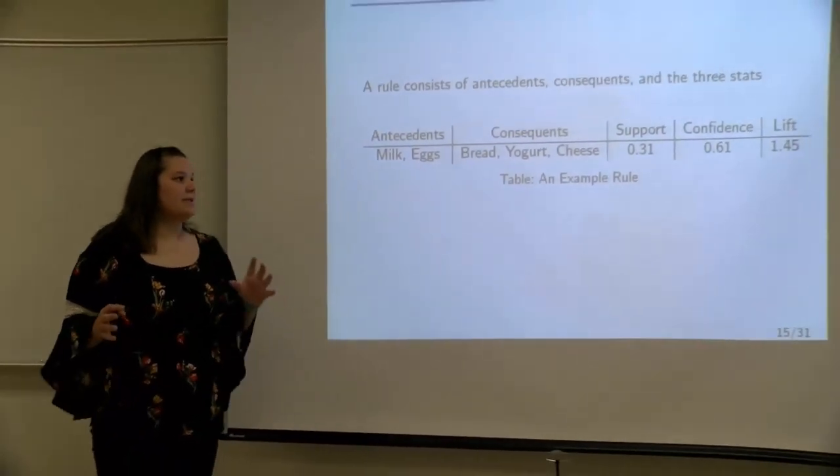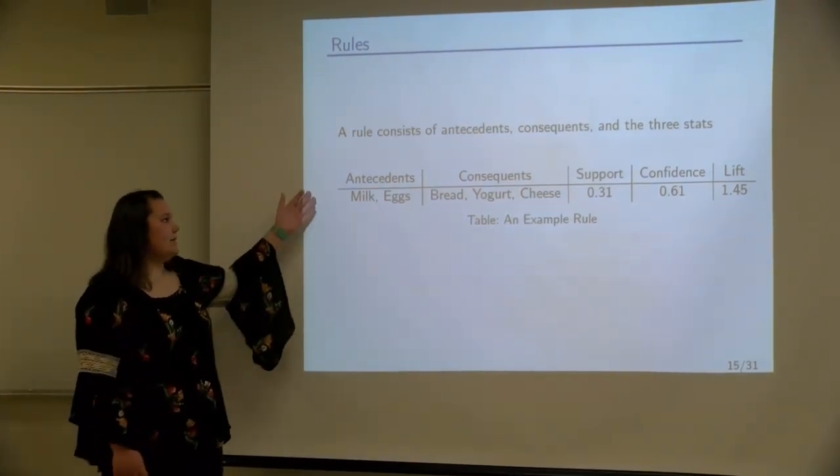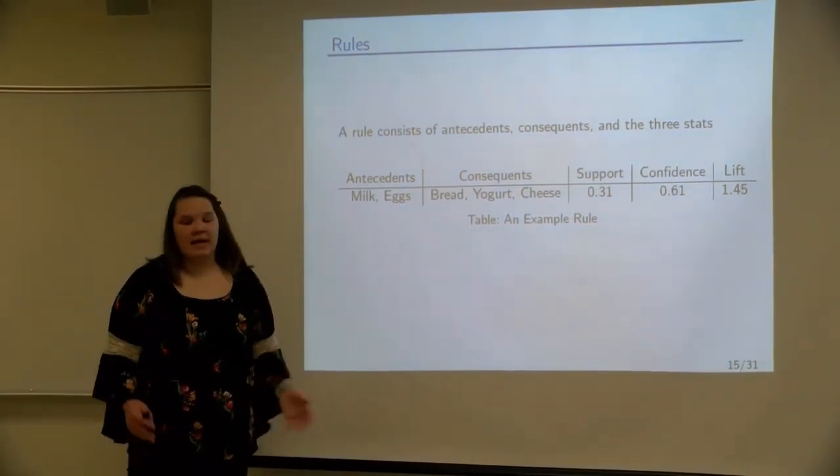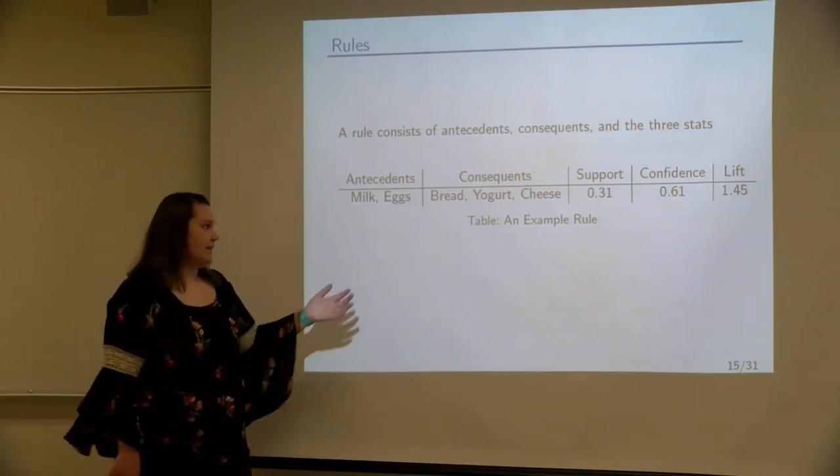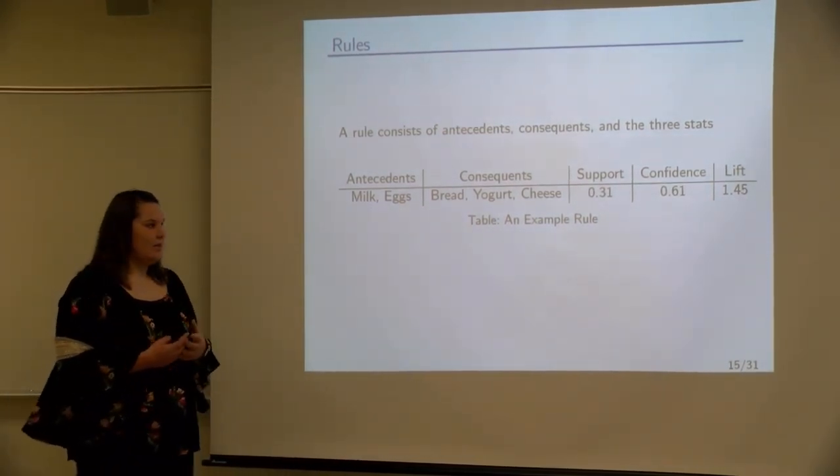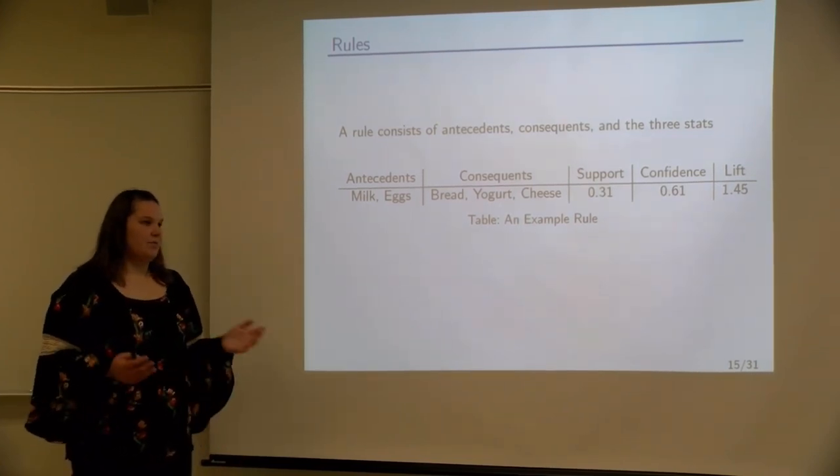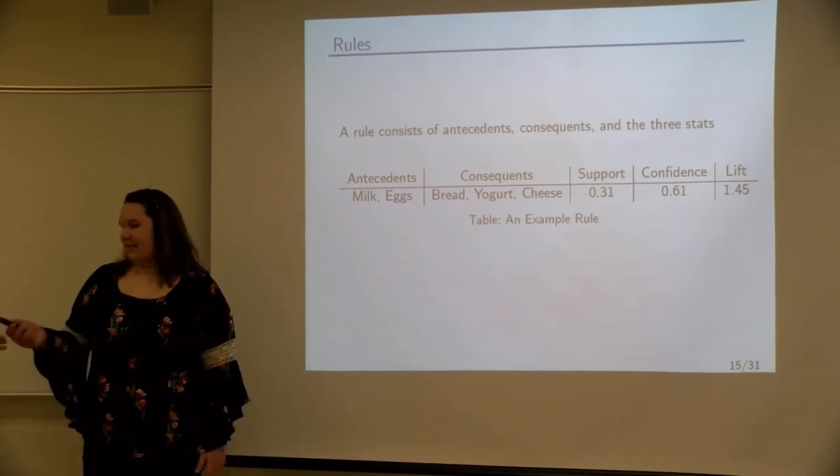And then just an example, so it's like an if-then statement. So the antecedents are the if part, so milk and eggs. And then the then part is the consequences, so bread, yogurt, and cheese. And since we're under confidentiality, we have to use generic products instead of the actual products that we looked at. We decided to go for food.